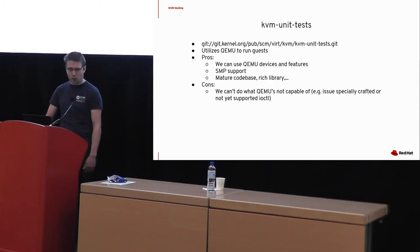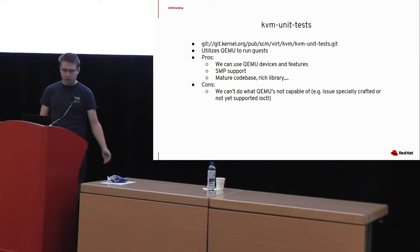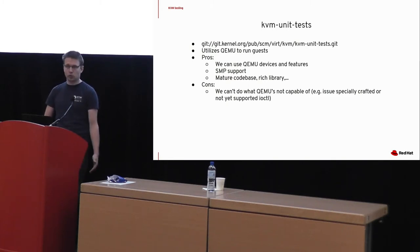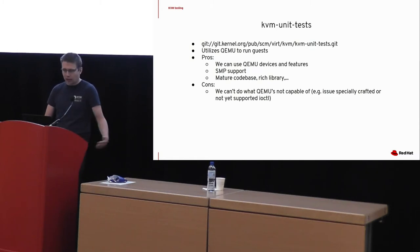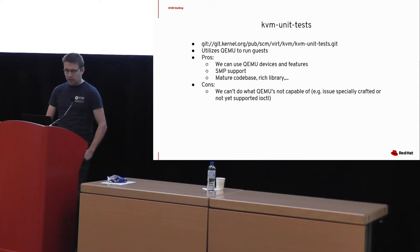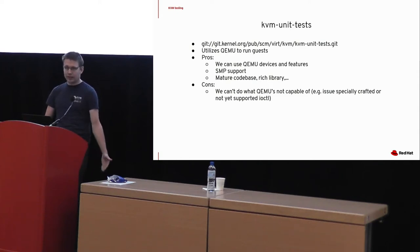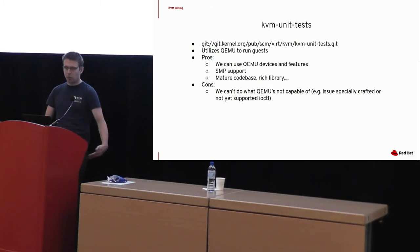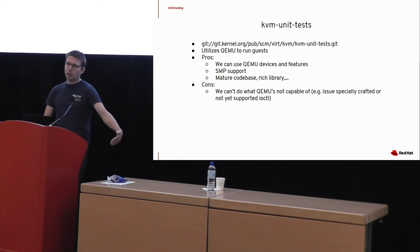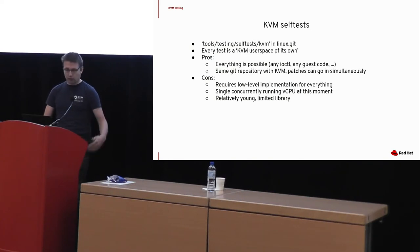The first testing framework is KVM unit tests. It lives in a separate Git repo and is fairly old. It uses QEMU to run tests — it doesn't have to, but there's no reason to switch since QEMU works very well there. The advantage is that it's feature-rich and we can use QEMU devices for testing. The disadvantage is that we can only do what QEMU is capable of. So if we want to test some specific sequence of ioctls which QEMU will never issue, we won't be able to do that from KVM unit tests.